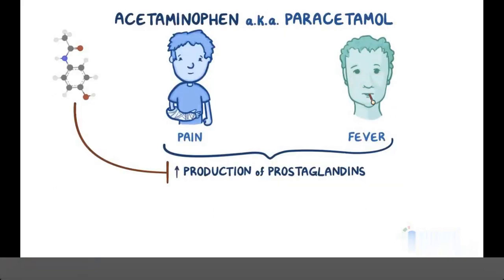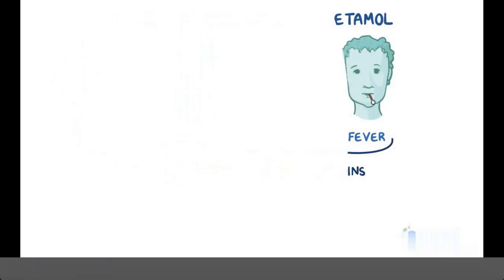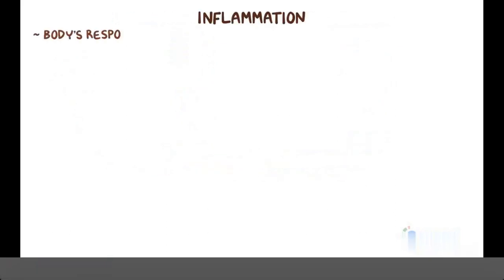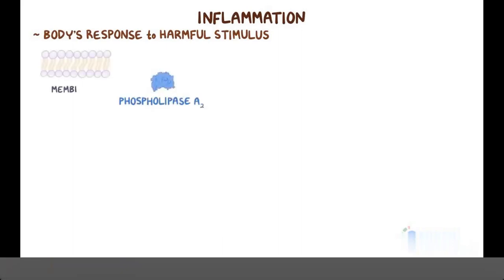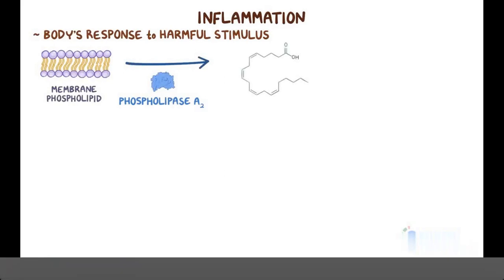In order to understand how acetaminophen works, we first need to talk briefly about inflammation, which is the body's response to a harmful stimulus, such as infection or injury. During inflammation, immune cells use an enzyme called phospholipase A2 to take membrane phospholipids and make a 20-carbon polyunsaturated fatty acid called arachidonic acid.